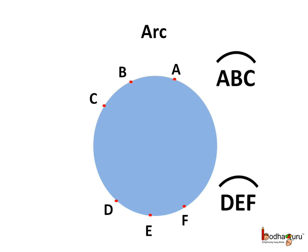Let's take few points on the boundary of circle say A, B, C and another set say D, E, F. Look, the surface of the circle can be divided into many curves. A curve which is a part of a circle is called an arc.